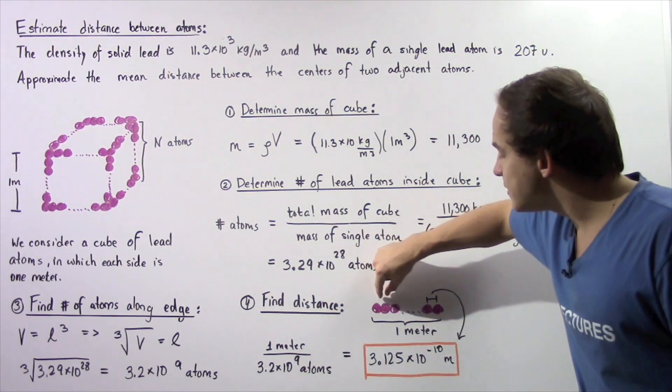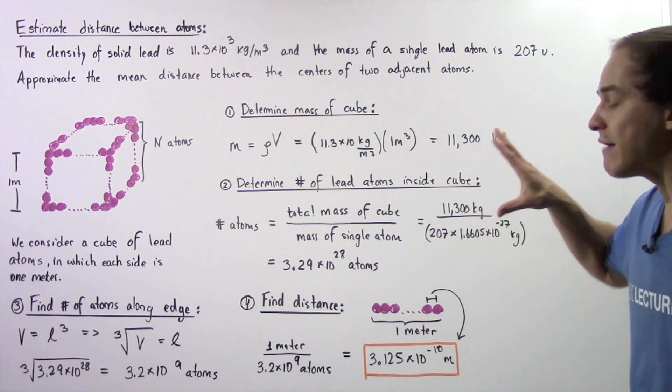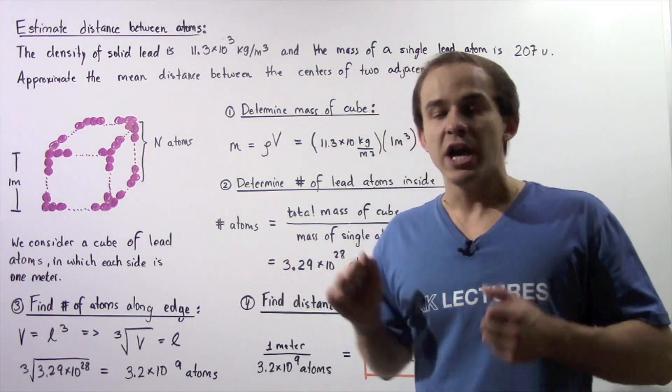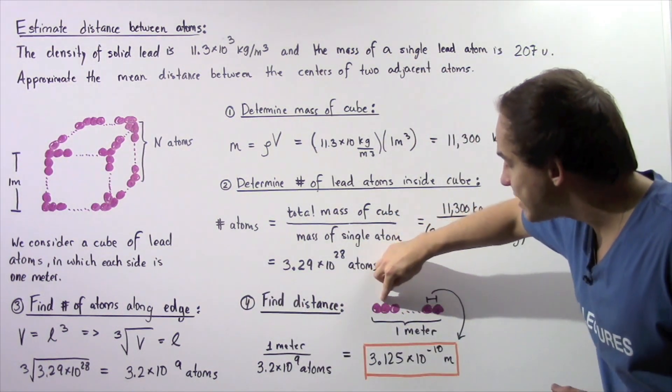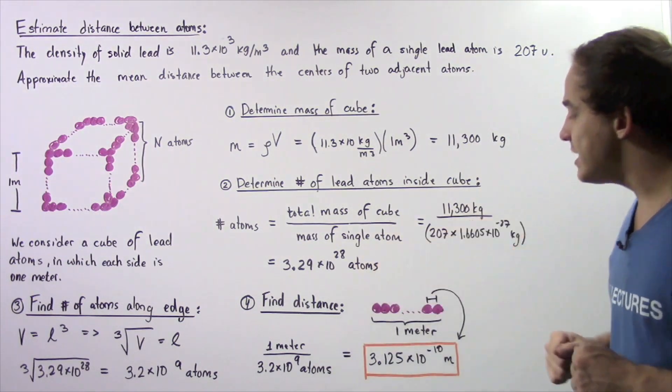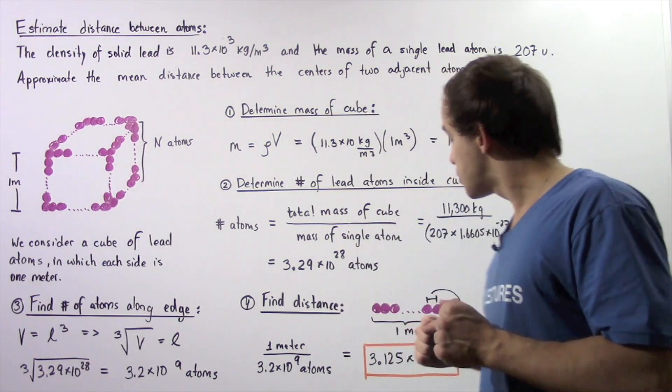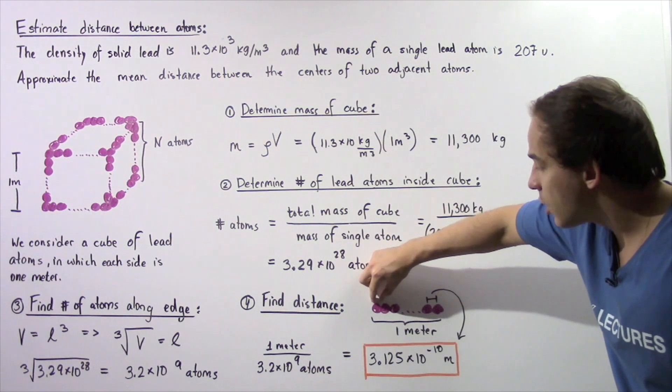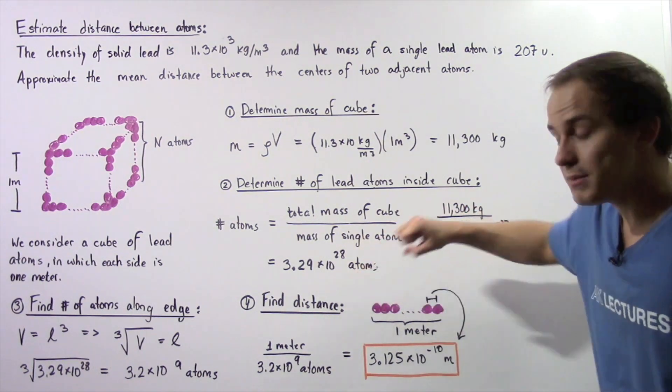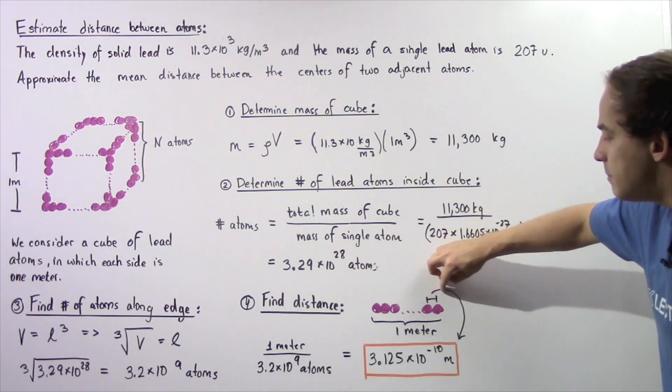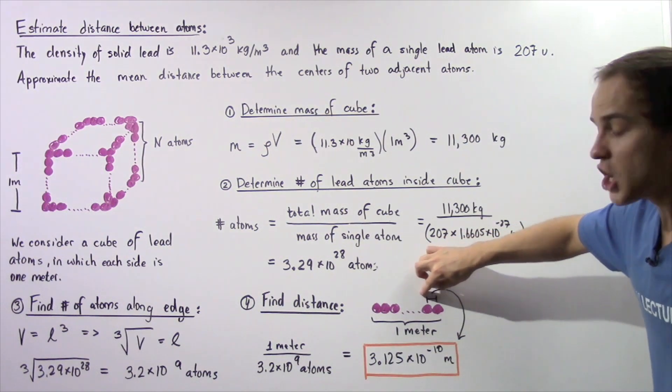So because every single atom is assumed to have the same exact diameter and because there is no space or we assume that there is no space between any two atoms,